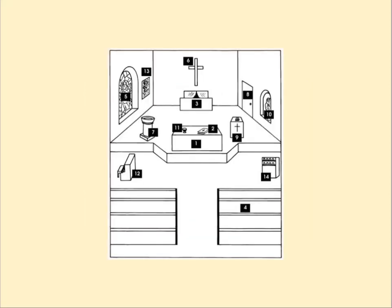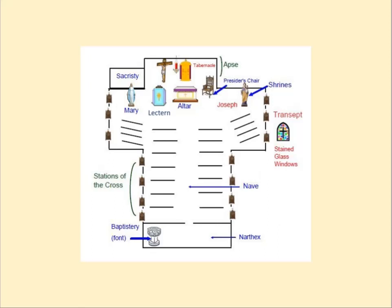The stuff inside a church — the small level stuff — includes the altar, the tabernacle, the baptismal font, the confessional, statues, stained glass windows, and things like that.